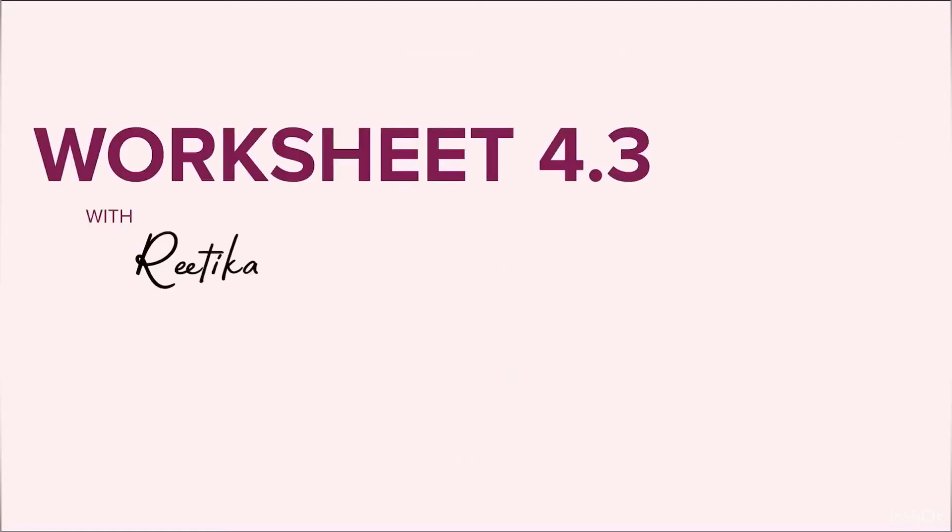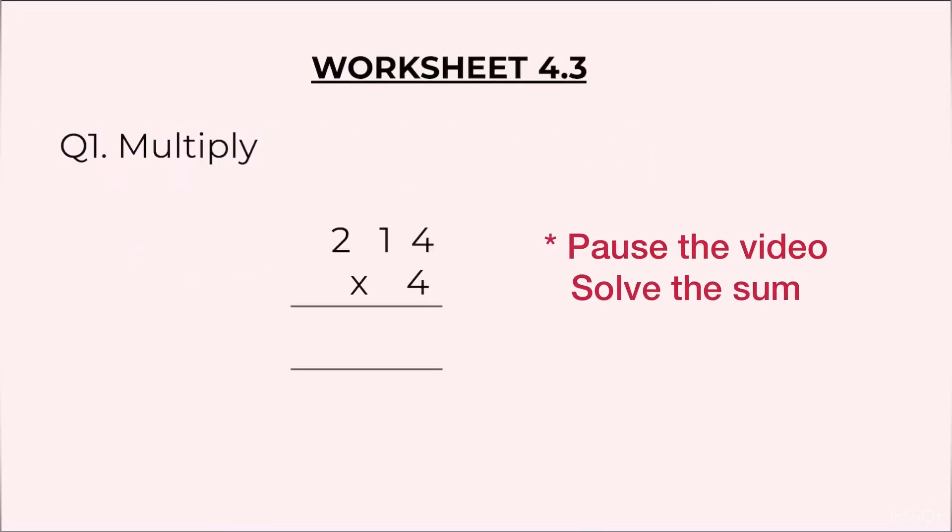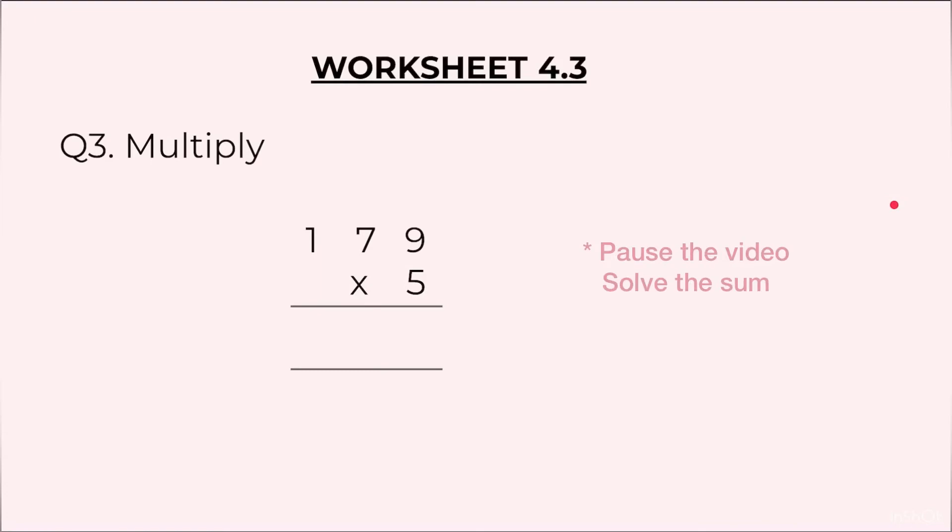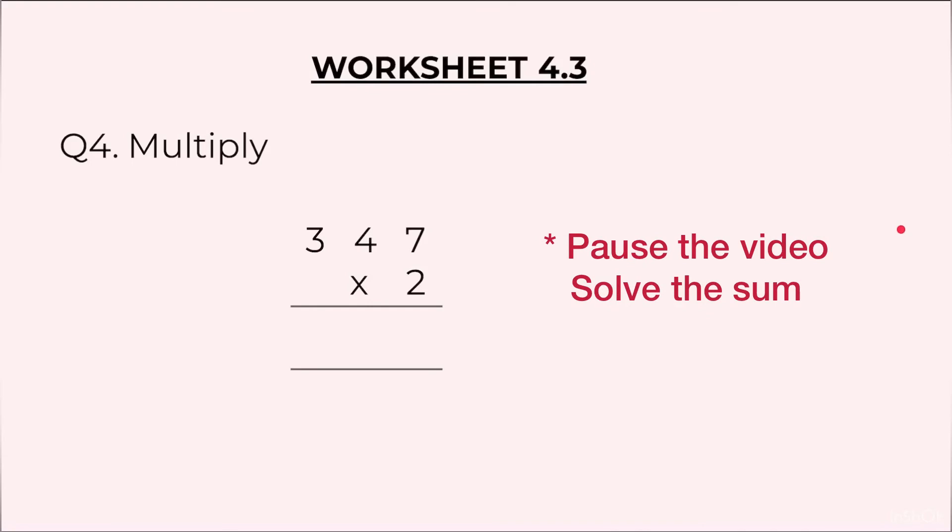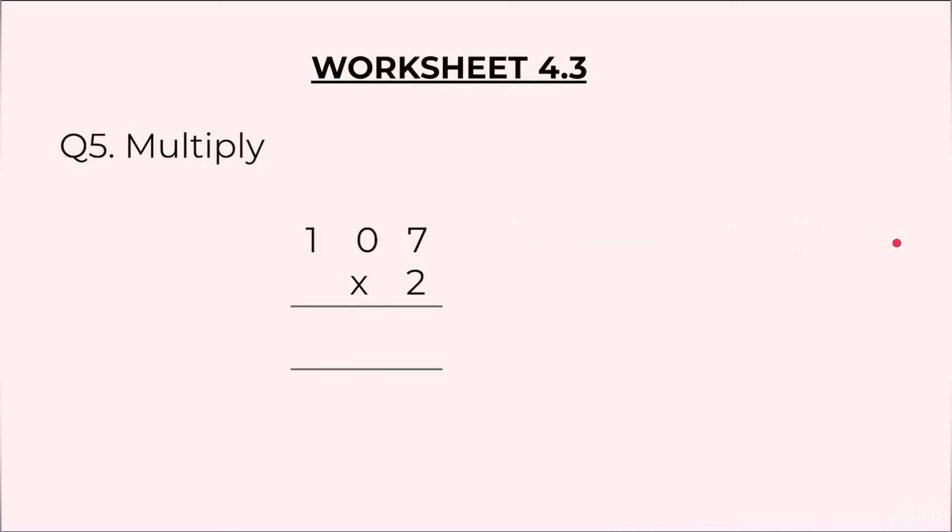Now we are ready to do the worksheet 4.3. Question 1: multiply 214 into 4. Question 2: 137 into 7. Question 3: 179 into 5. Question 4: 347 into 2. Question 5: 107 into 2.